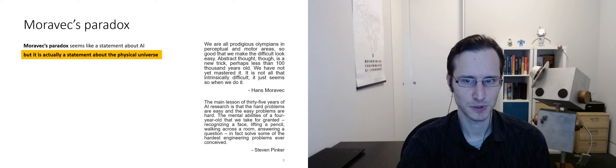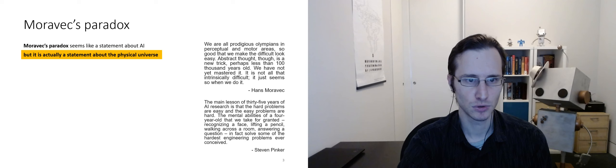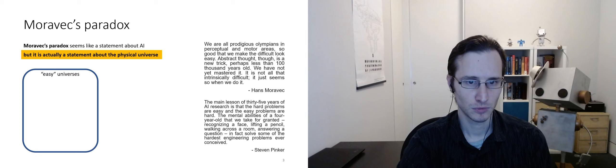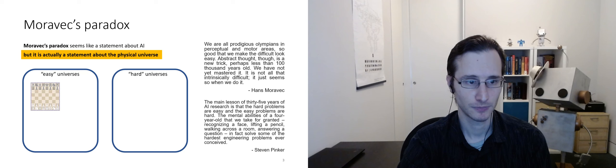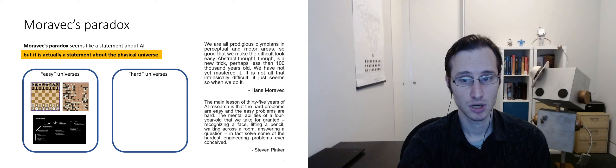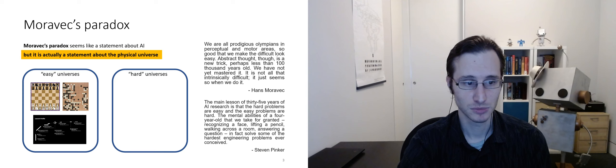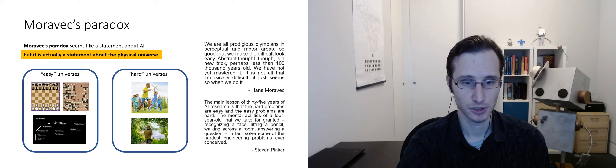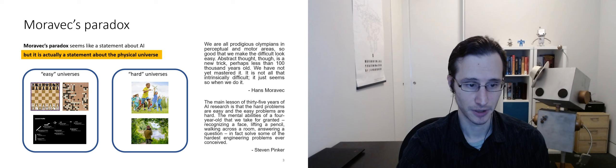Now, Moravec's paradox seems like a statement about AI, but it's actually a statement about the physical universe. It's a property of the universe that we inhabit, that these perceptual and motor behaviors are so difficult while abstract thought is comparatively easier. And we could imagine that there are some easy universes where this is not the case, and some hard universes where it is. So easy universes would be chess and Go, and also a lot of problems in engineering. Hard universes are more like the ones that we live in, ones that are populated with many agents, that have messy physical rules, that have a great deal of diversity and variability. And it's exactly these hard universes that I think reinforcement learning is so well adapted to tackle. But this is also where we've actually seen comparatively less research in recent years.